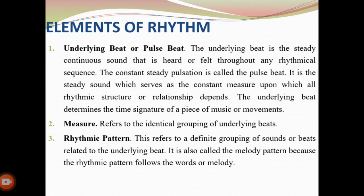The next element of rhythm is the measure. It refers to the identical grouping of underlying beats — a single unit of time featuring a specific number of beats played at a particular tempo. When writing a song on a page, composers divide their compositions into measures — digestible sections that help players perform the music as intended.